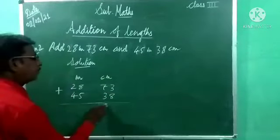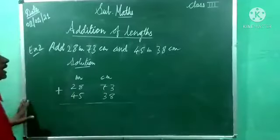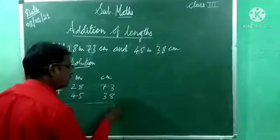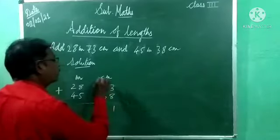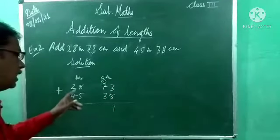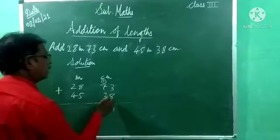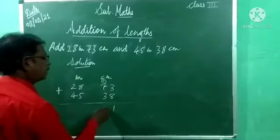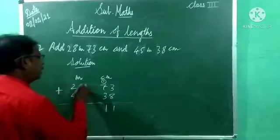Start adding from right side. Now 8 plus 3, 11, carry 1. Now 1 plus 7, 8, and 8 plus 3, that's 11 again. 7 plus 3, 10, 10 plus 1, 11, again carry 1.